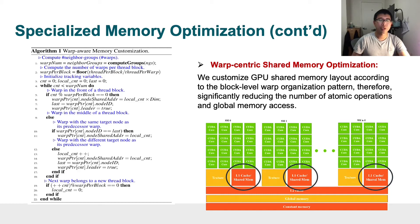The second technique we use is warp-centric shared memory optimization. We customize the GPU shared memory layout according to our block-level warp placement. Therefore, we can significantly reduce the number of atomic operations and global memory accesses.